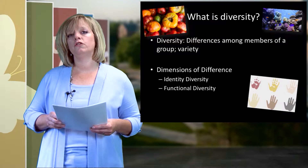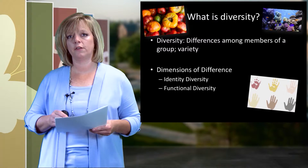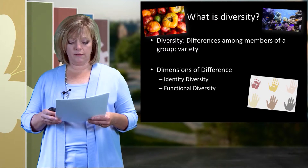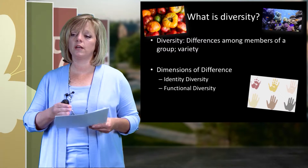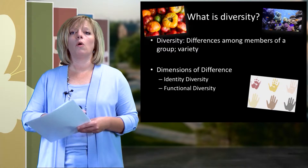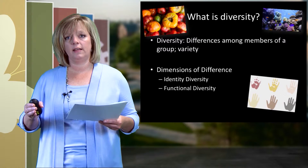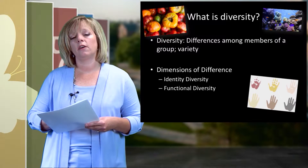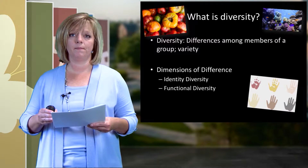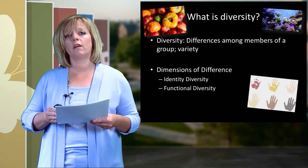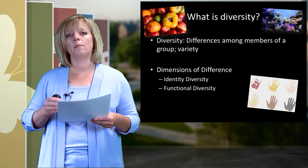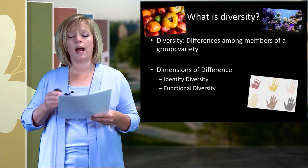Consider two general categories of human diversity. One is identity diversity — the characteristics that you can see when you look into a crowded room. Things like sex, ethnicity, or age. These characteristics also include things like religion or sexuality. Identity diversity characteristics are important and help make us who we are and help guide us in how we see the world.